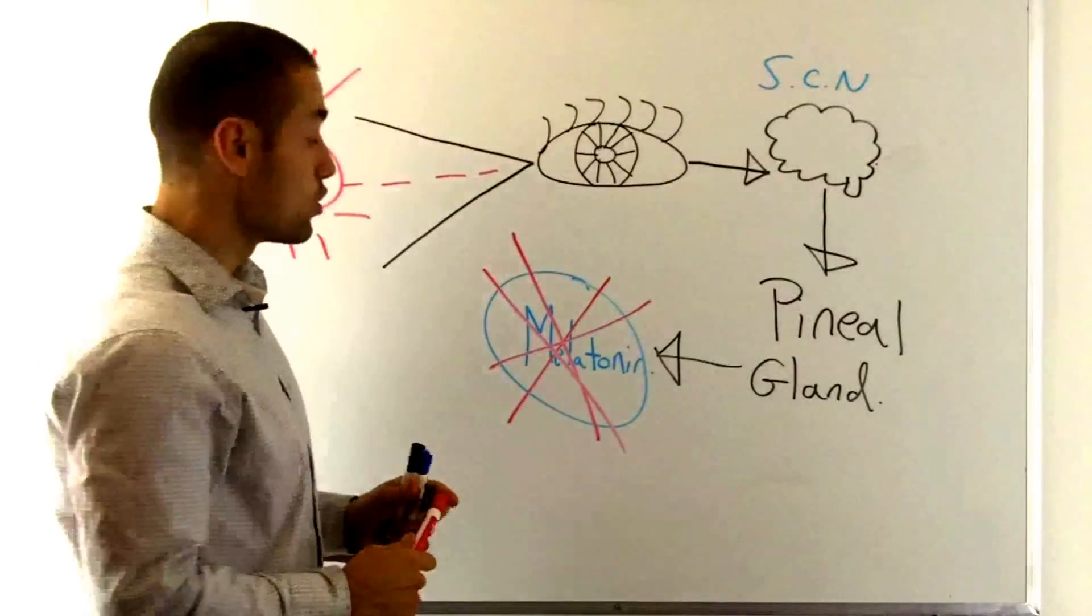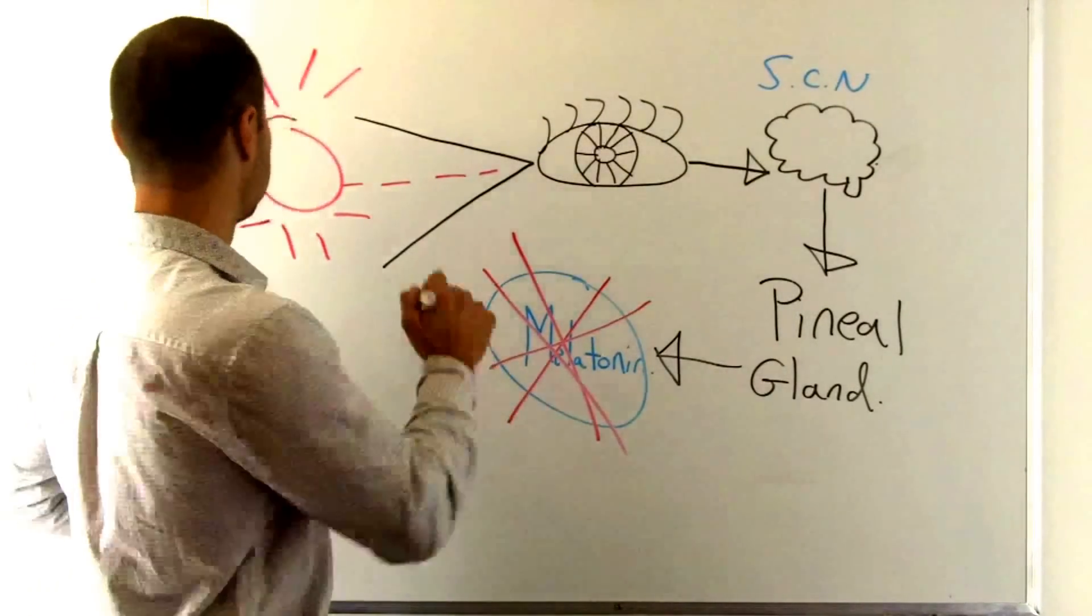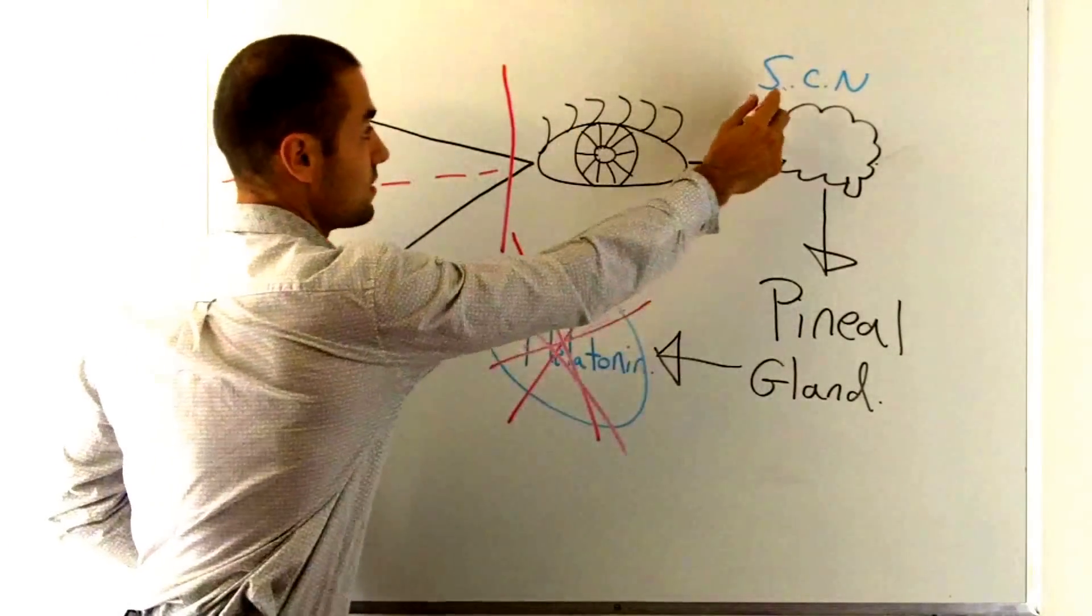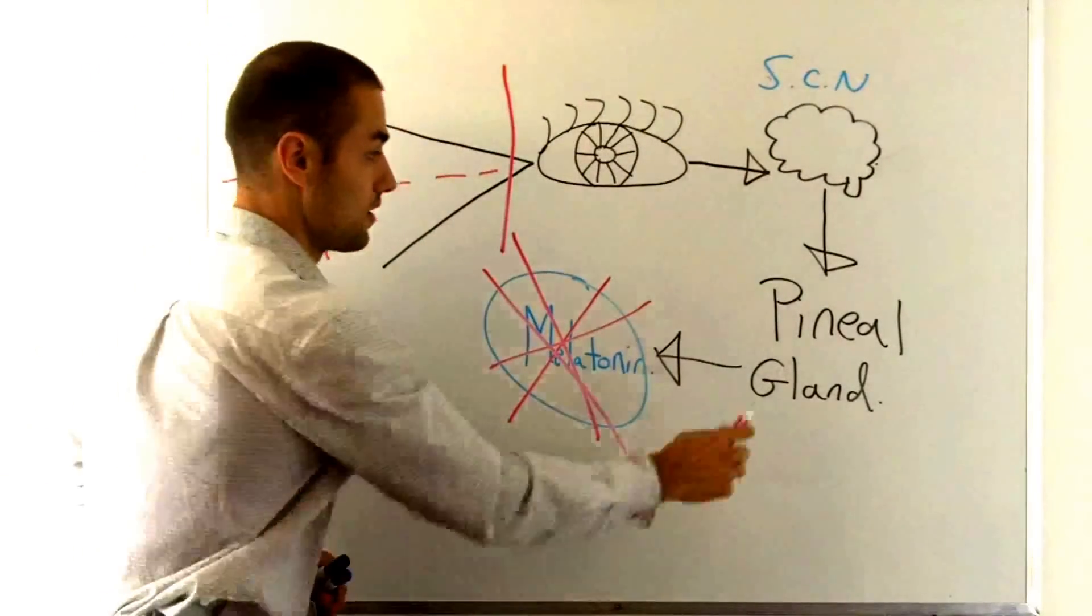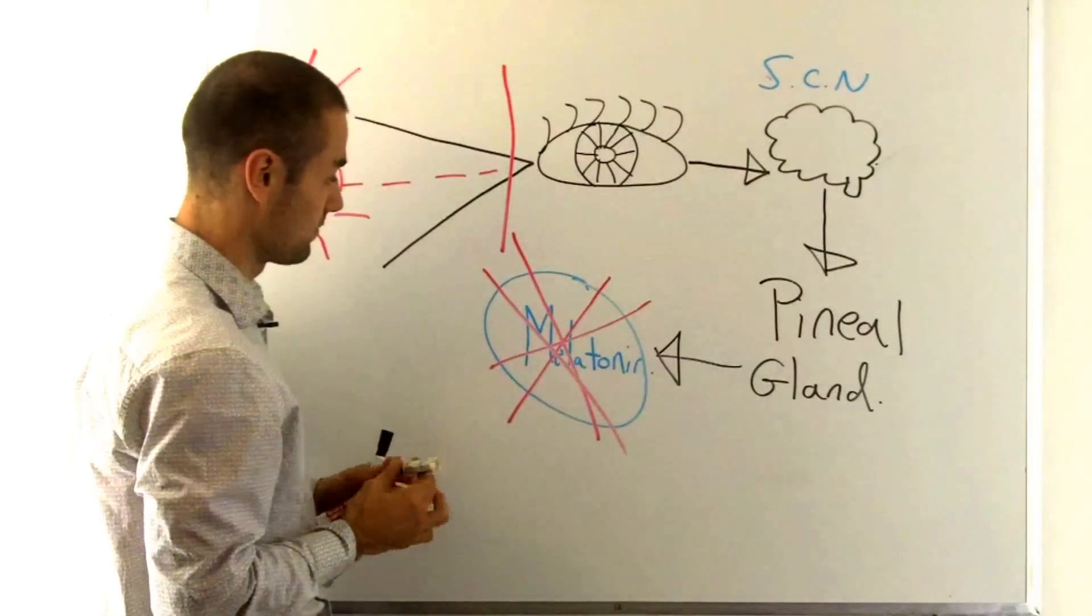But at night time you want to make melatonin. How is melatonin made? Well, no photons to the eye sends a signal to the suprachiasmatic nucleus that it's night time. It tickles the pineal gland, the pineal gland then makes melatonin.